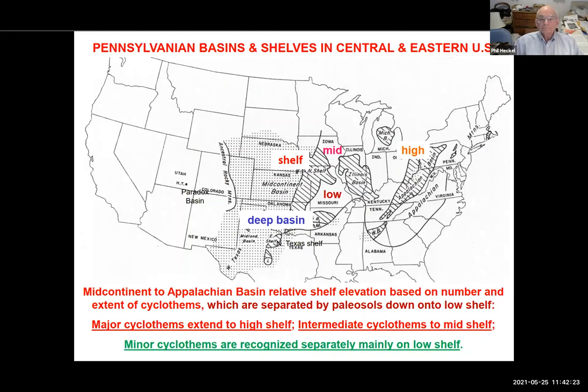This shows Pennsylvania basins and shelves in the central-eastern US. We have the deep basins in Oklahoma, going up through low shelf elevation to mid shelf elevation up in Iowa, to high shelf elevation in the northern Appalachian Basin. The relative shelf elevation is based on the number and extent of the cyclothems, which are separated by paleosols down onto the low shelf.